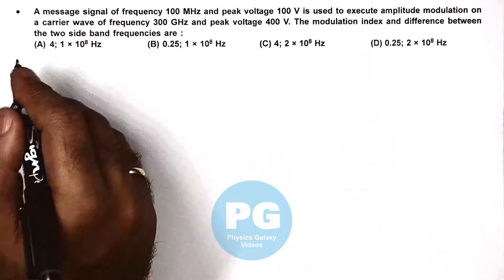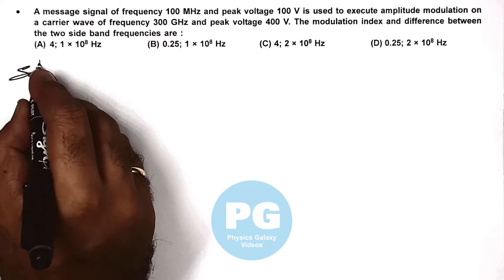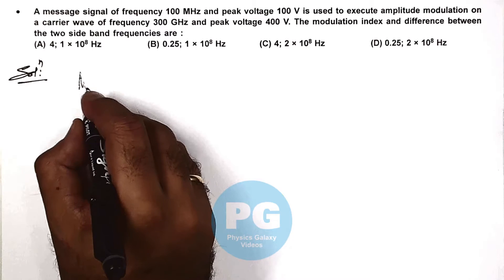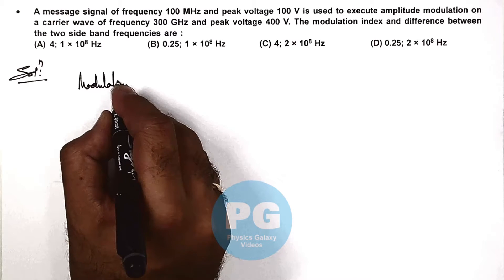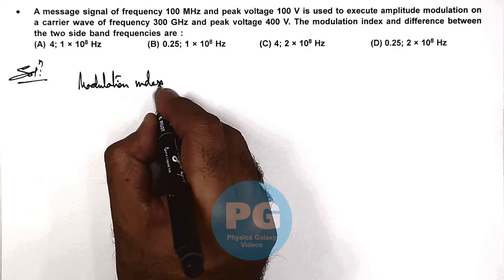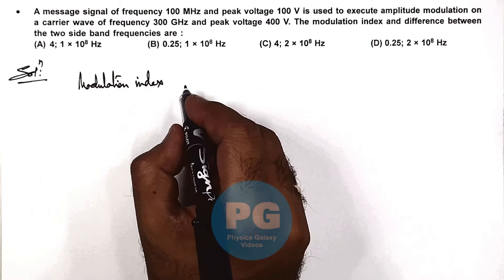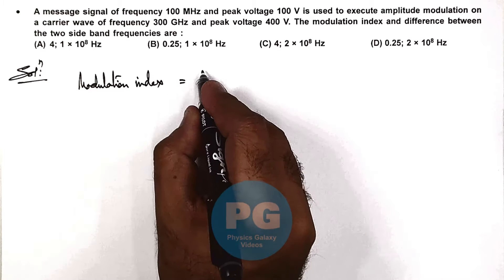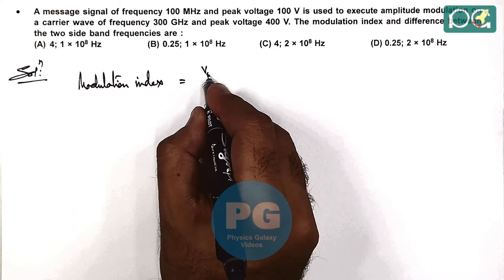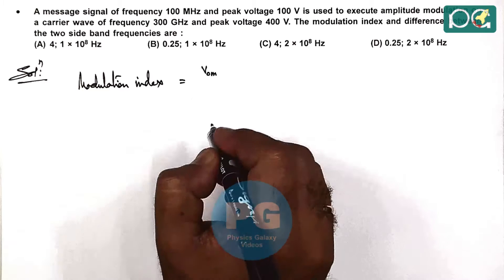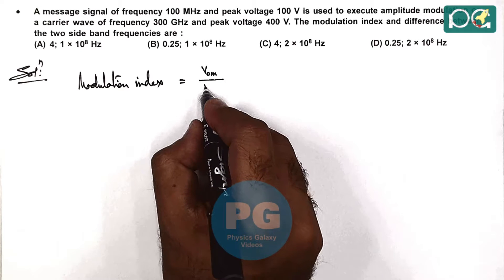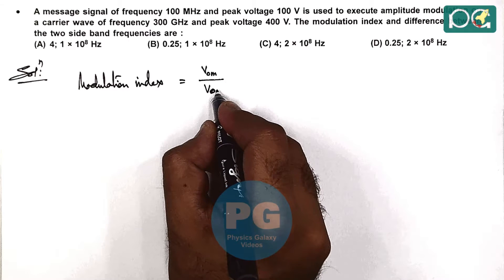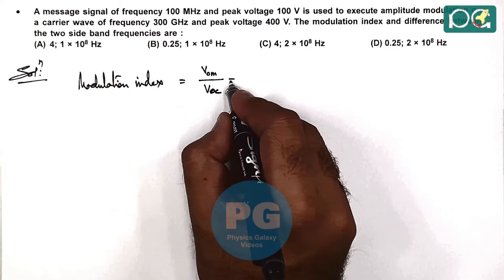Here we know the modulation index for an AM wave is given as modulating signal voltage divided by carrier signal voltage, the peak value.